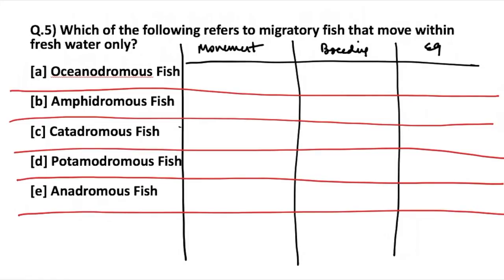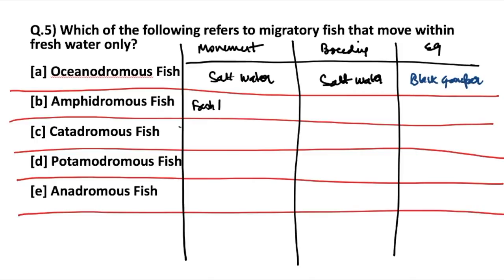Oceanodromous fish are migratory fish that move within salt water and also breed in salt water. An example is the black grouper. Amphidromous fish, as the name suggests, live in both fresh water and salt water, and can breed in both fresh and salt water independently. An example of amphidromous fish is the mountain mullet.